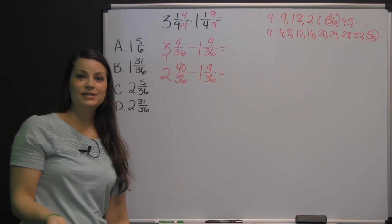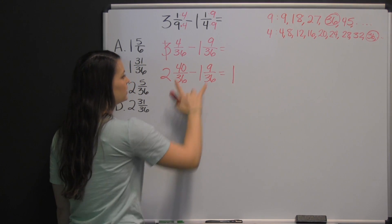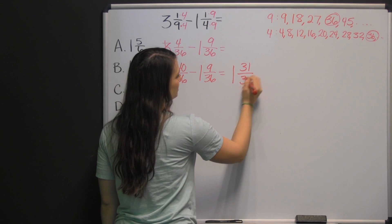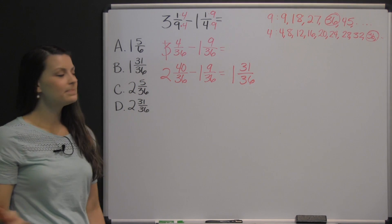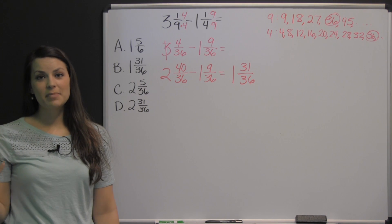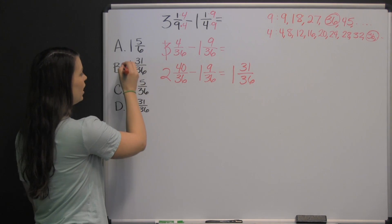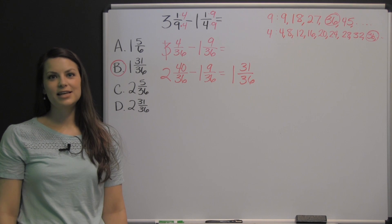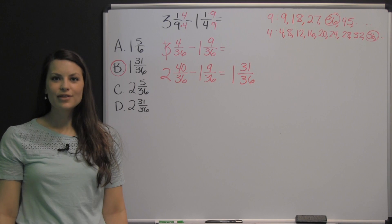Now we can subtract. Start with your whole numbers: two minus one is one. Then subtract your numerators: forty minus nine is thirty-one thirty-sixths. You always want to check with fractions to see if you can simplify them, but thirty-one is a prime number, so we can't divide it by anything other than one or itself. So, our answer is one and thirty-one thirty-sixths. That's the type of question you'll see on the mathematics computation portion of the TABE exam.